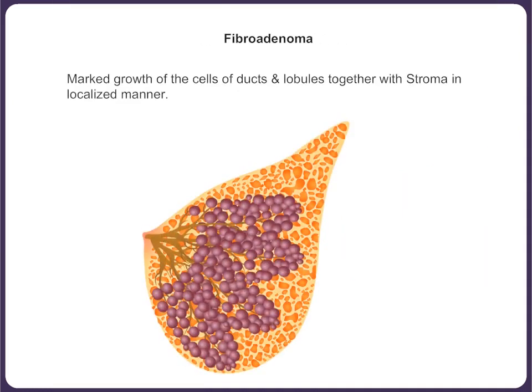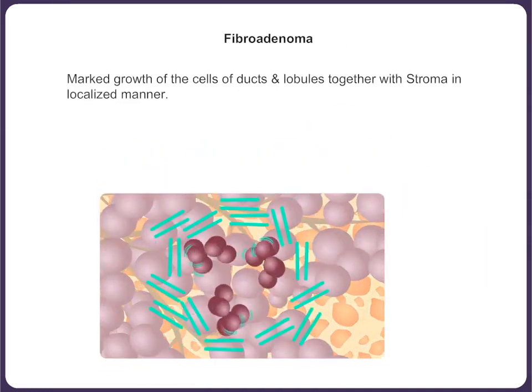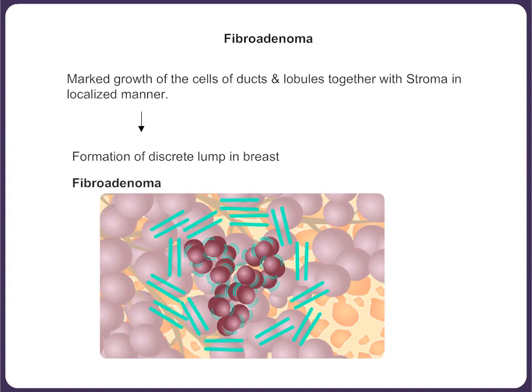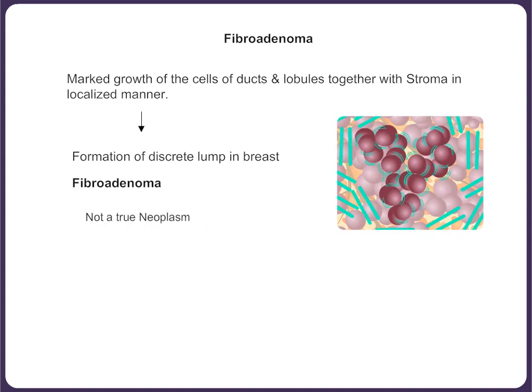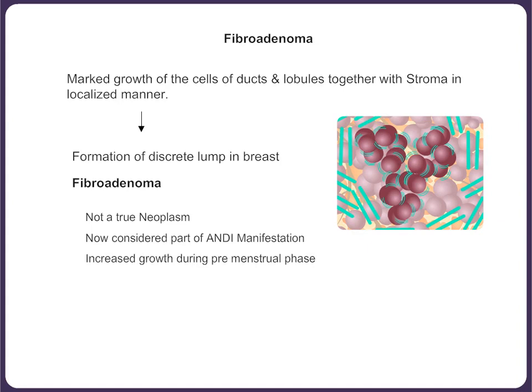Marked growth of ductolobular cells along with the stroma in a localized manner may result in formation of a discrete lump in the breast called fibroadenoma. Fibroadenoma is not a true neoplasm and is now considered as part of ANDI manifestation. This view is supported by the fact that some girls experience increased growth of fibroadenoma in the premenstrual phase and reduction in size after the onset of menstrual flow.